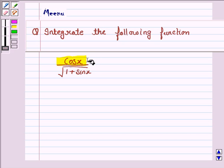The given function is cos x upon under the root 1 plus sin x. Let us now proceed on with the solution.